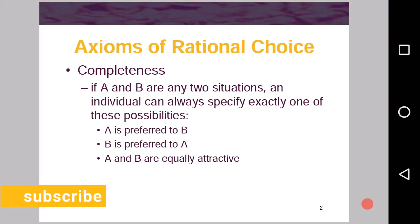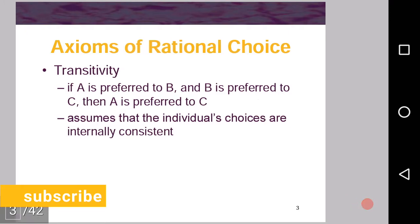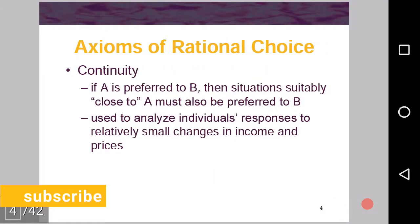Axioms of rational choice. We have basically three axioms of rational choice which are completeness, transitivity, and continuity.